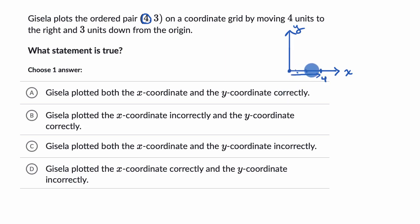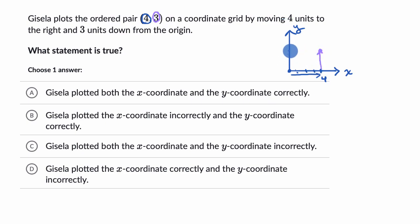Maybe that's one, two, three, and then four. So I'd move four to the right. And then the y-coordinate tells us how much to move up, so I would move three up to get right over here. Maybe this is one, two, and three. So I'd go four to the right and then three up.